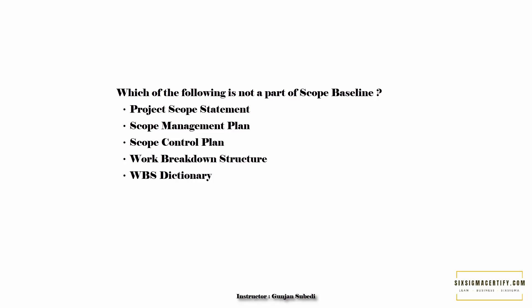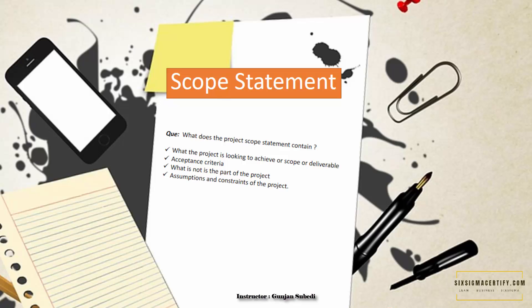We learned about different components of the scope baseline, with the scope statement being one of the major components. The project scope statement contains information on what the project is looking to achieve, the deliverables, acceptance criteria, what is and is not part of the project scope, and also assumptions and constraints of the project.